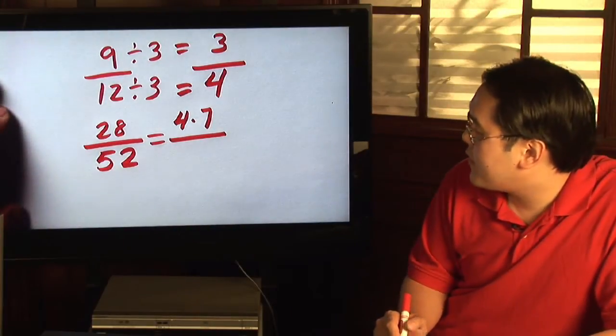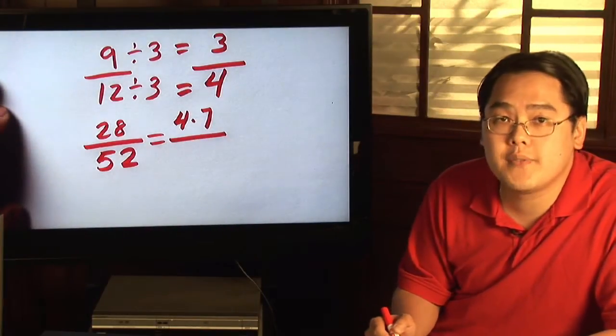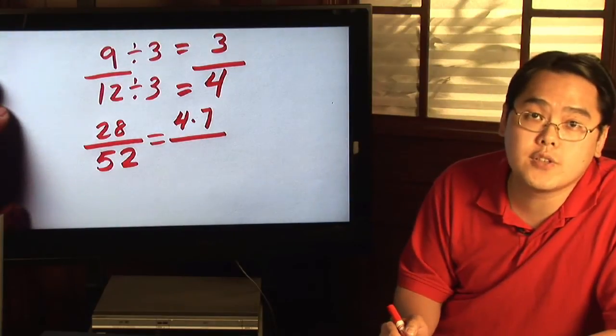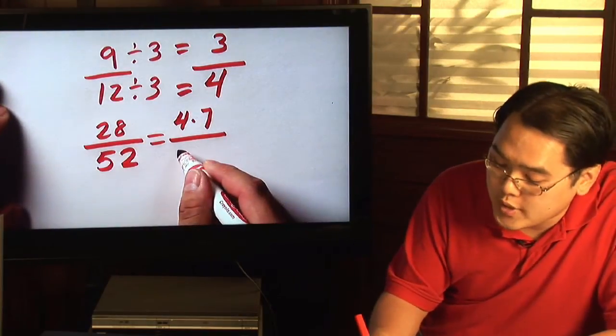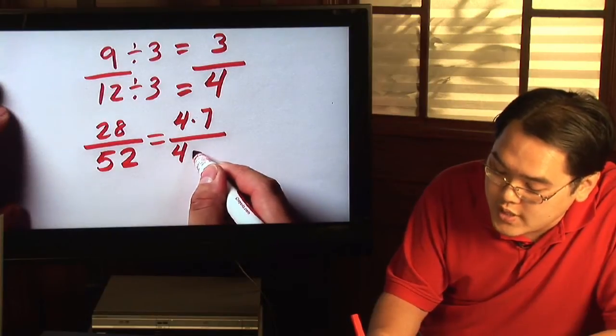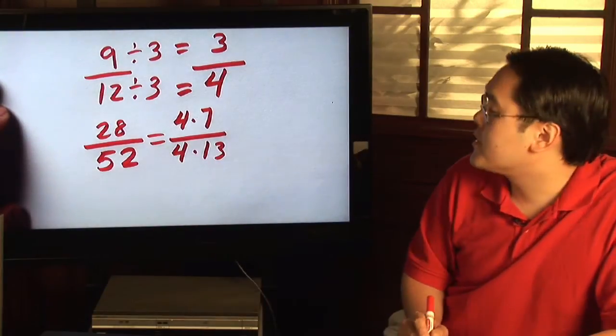Now 52 is a little bit tough, but since you have 4 times 7, see if 4 will go into 52. Well, if you're able to calculate that, you'll see that 52 equals 4 times 13.